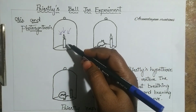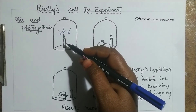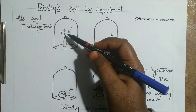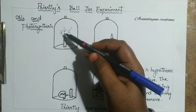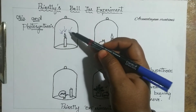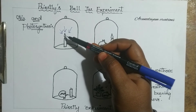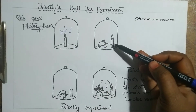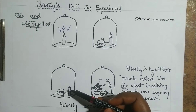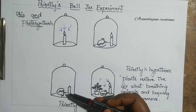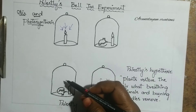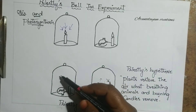Why did the candle extinguish in the bell jar? Because Joseph Priestley's logic was that something useful for the candle to burn is absent in the bell jar. Similarly, something useful for the candle to burn and something useful for the animal to breathe is absent in the bell jar — both were absent.